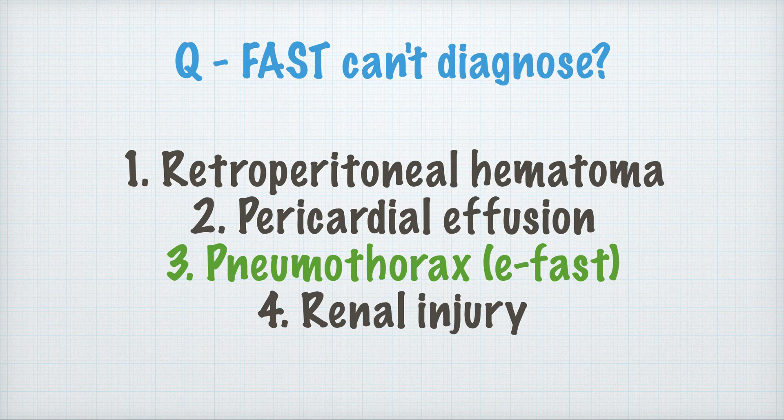FAST cannot diagnose which of the following? Options were retroperitoneal hematoma, pericardial effusion, pneumothorax, and renal injuries. FAST can diagnose renal injuries, pericardial effusion, and retroperitoneal hematoma, but not pneumothorax — for that, e-FAST is needed.